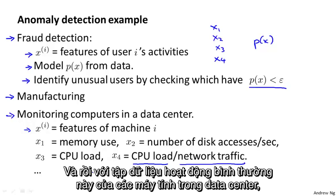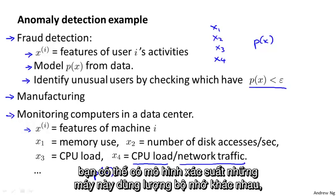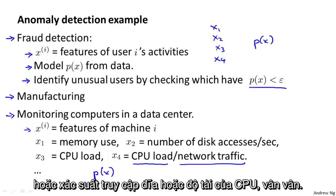Then given a data set of how your computers in your data center usually behave, you can model the probability of x. You can model the probability of these machines having different amounts of memory use, or probability of these machines having different numbers of disk accesses, or different CPU loads and so on.